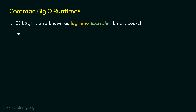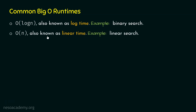The second common big O runtime is O(N), also known as linear time. As the size of the input increases, the growth rate increases linearly, which is why it is called linear time. The example algorithm is linear search, whose time complexity is O(N). Linear search is also a searching algorithm, which we discussed when we covered binary search.